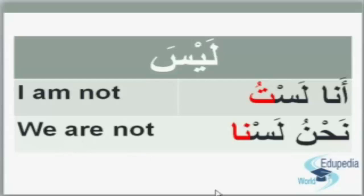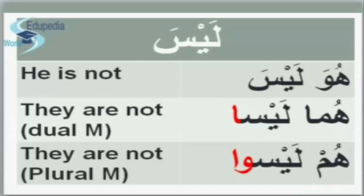We are not. 'We' or 'we are' is نَحْنُ. We are not is نَحْنُ لَسْنَا. There is no يَا, سُكُون on top of سَ, and at the end there is a long sound نَا. نَحْنُ لَسْنَا means we are not. So: أنا لستُ — I am not, and نَحْنُ لَسْنَا — we are not.